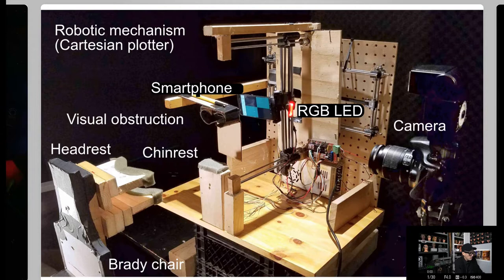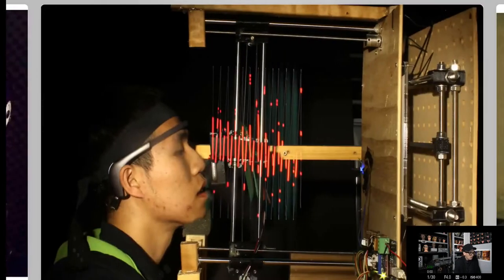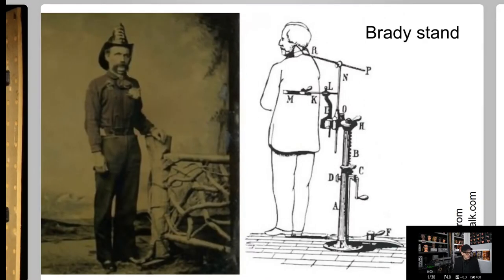This is the apparatus my daughter built in high school together with another student. There's a 'Brady chair' that holds the subject steady — a Brady stand was used in early photography to hold people still during long exposure photographs. The apparatus moves a smartphone back and forth across the field of view of the wearer. There's a flashing checkerboard and it uses SSVEP — steady state visual evoked potentials — to scan the brain, then modulates an RGB LED to show the amount of valence flux present, basically how much vision is present. A camera photographs that thing sweeping by — as that light whips back and forth in front of the eye, it traces out the valence flux.